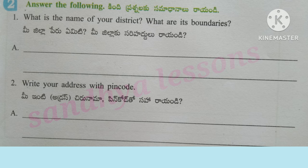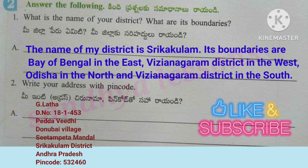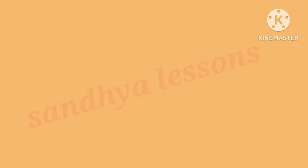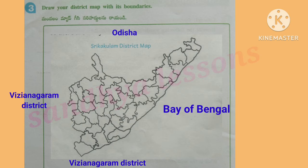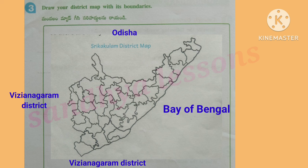Question 2: What is the name of your district? What are its boundaries? The name of my district is Srikakulam. Its boundaries are Bay of Bengal in the East, Vijayanagram district in the West, Odisha in the North, and Vijayanagram district in the South. Question 3 — Write your address with PIN code: G. Lata, Door number 181453, Paddavidi, Donubai village, Setampeta Mandal, Srikakulam district, Andhra Pradesh, PIN code 532-460. Draw the district map — Srikakulam district has Bay of Bengal to the East, Odisha to the North, and Vijayanagram district to the West and South.